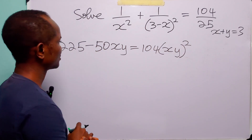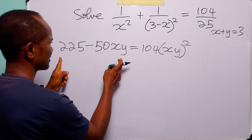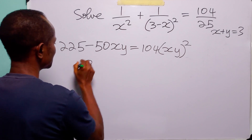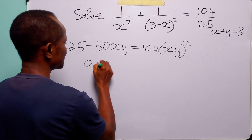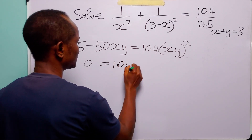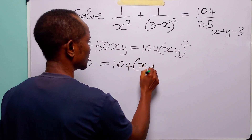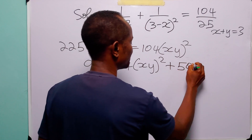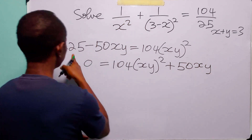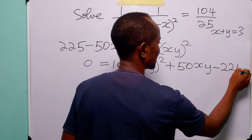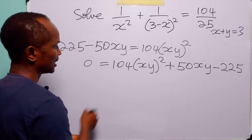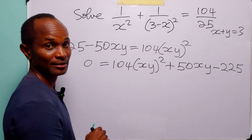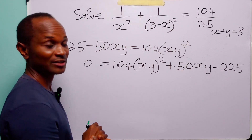Now let us rearrange this equation. We are going to take all the terms on the left-hand side over to the right-hand side. When we do that, we are left with 0 on the left-hand side, equal to 104(xy)² plus 50xy minus 225. Now when you look at this, you will see that this is a quadratic equation in xy, and we can solve this equation by factorization.